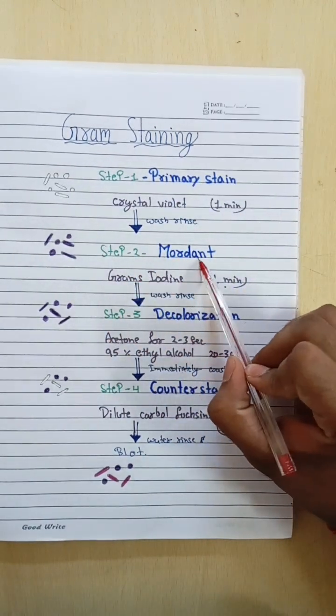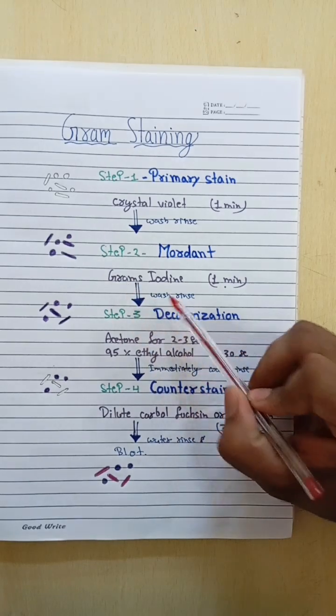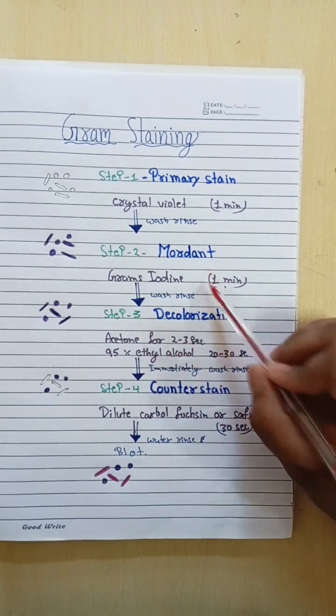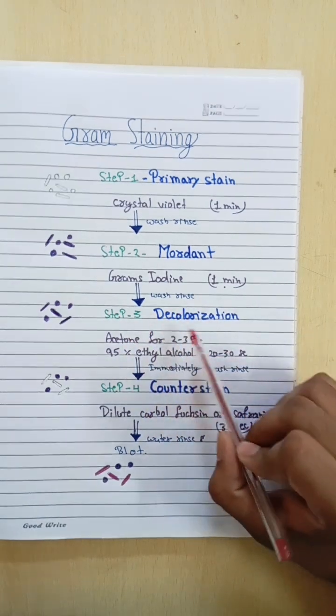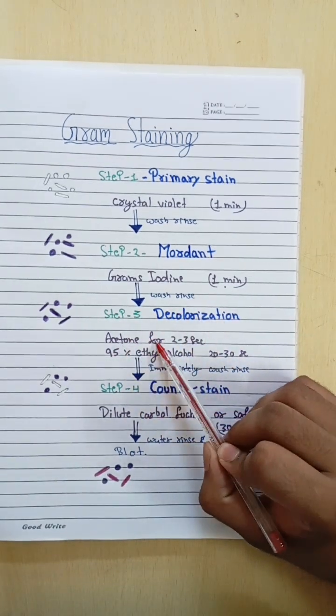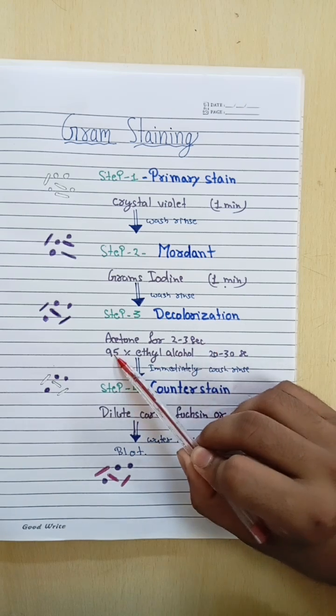Step two is mordant. Then we use grams iodine. We have to keep it for one minute, then we wash. Step three is decolorization. If we have acetone, we have to keep it for two to three seconds.